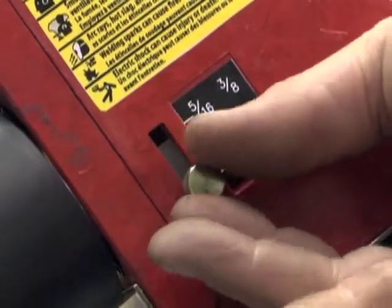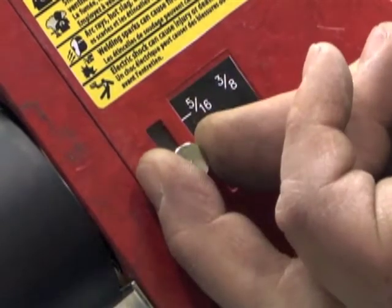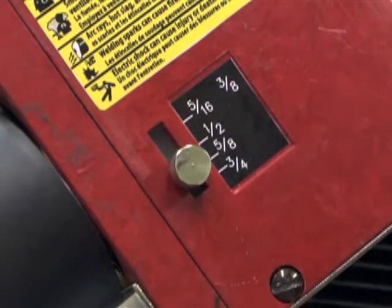First, set the electrode guide block for the electrode diameter being used by loosening the thumb screw, adjusting the guide block, and then tightening the thumb screw again.